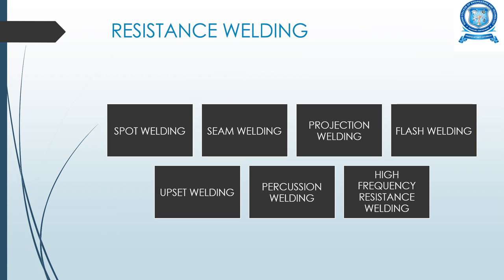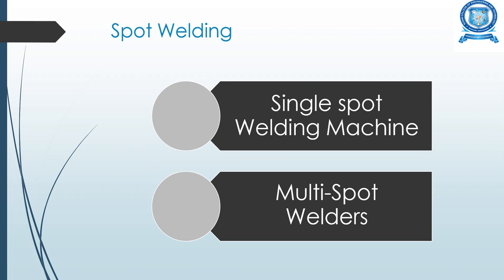The different types of resistance welding include spot welding, seam welding, projection welding, flash welding, upset welding, percussion welding, and high frequency resistance welding. Spot welding has two types: single spot welding machine and multi-spot welders.